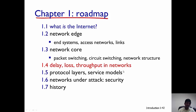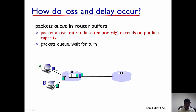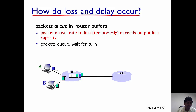Hi everyone. In this video we are going to talk about delay and loss in networks. So why do delay and loss occur in a network? Let's consider an example where a source A is sending a packet to a destination. This packet has to pass through multiple routers before it reaches the destination.